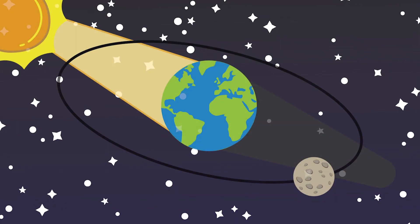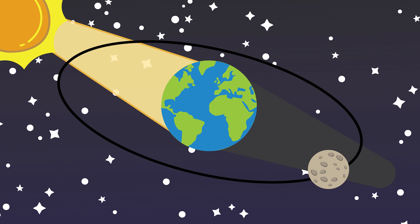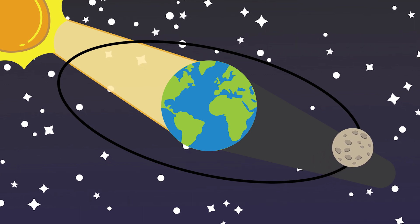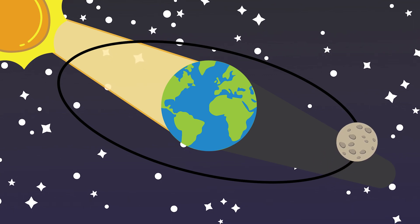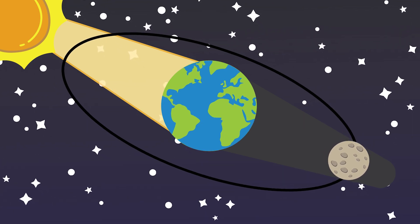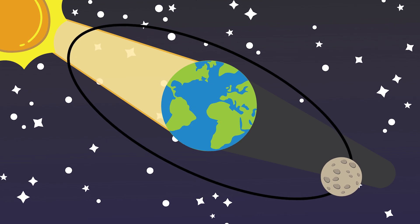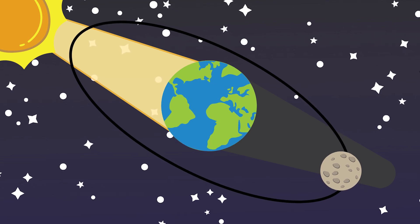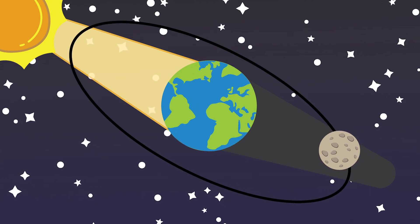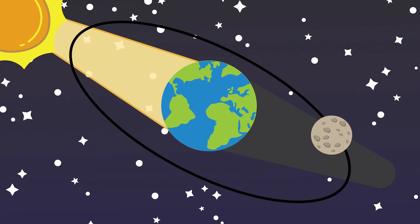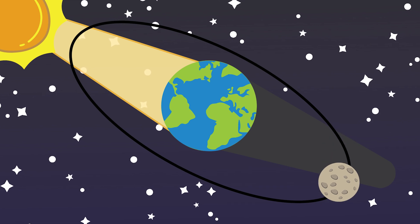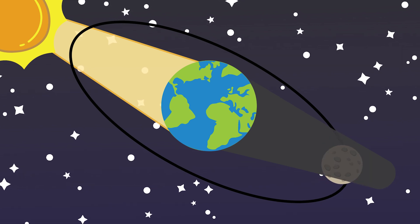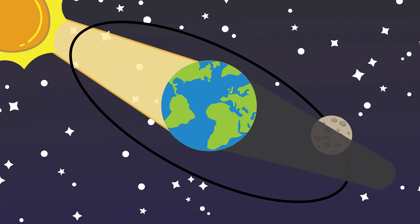We might think that the moon always passes exactly behind the earth so that earth's shadow is cast out into space and the moon would pass into it, but actually the moon's orbit is tilted a little bit. So sometimes — in fact most months during a full moon — the moon goes above or below the earth's shadow and we get no eclipse at all.